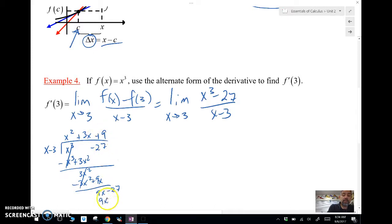Then we should get it to work out perfectly. This is what we're going to have on top. So, we're going to factor that. Limit as x approaches 3 of x minus 3 times x squared plus 3x plus 9 over x minus 3. These simplify out.